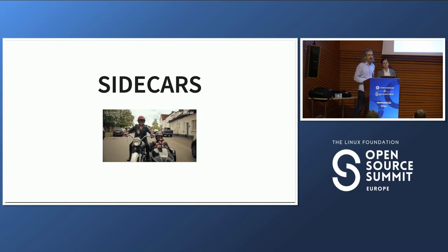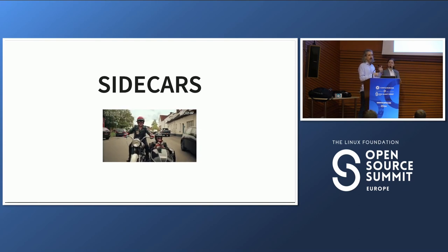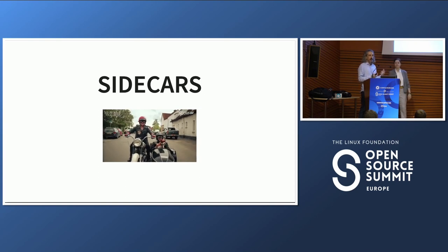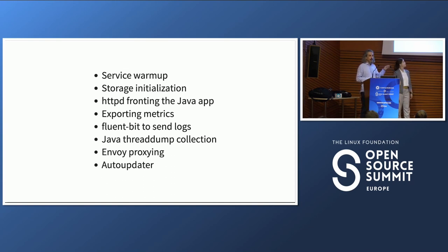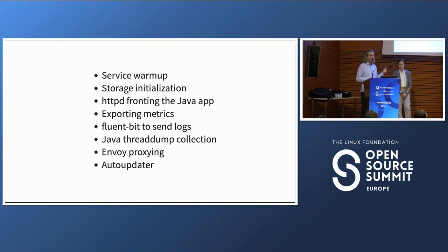We use the sidecar pattern a lot, because it allows us to not introduce new features into the existing Java application — people can move faster by creating sidecars or external services. Sidecars are convenient because you can run next to the application without mixing your code or having to follow the same release process. Examples of sidecars and init containers include: service warm-up, storage initialization, HTTPD fronting the Java application, sidecars to export metrics, Fluent Bit for logs, thread dumps, Envoy for proxying and networking, and an out-updater sidecar.